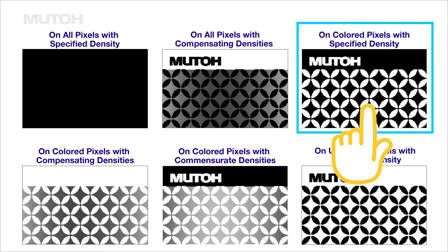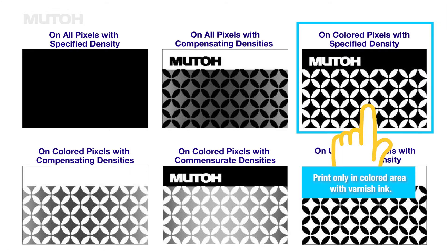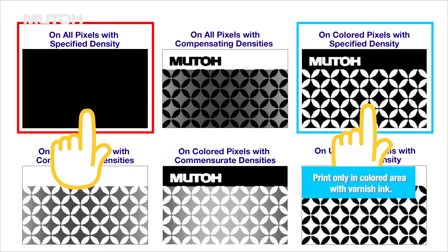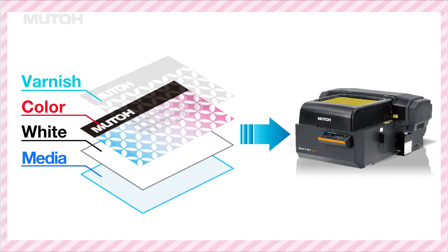We can select how we want to express the spot colors from among them. Select this one for varnish ink, and for white ink, select this one. All that remains is to send the data to the printer. We can't wait to see it completed.